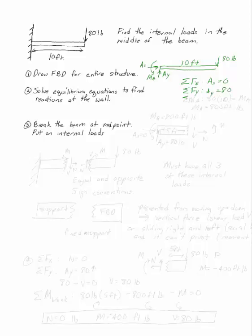And the sum of the moments at, say the wall, gives me 80 pounds at 10 feet equals Ma. So Ma is equal to 800 foot pounds.